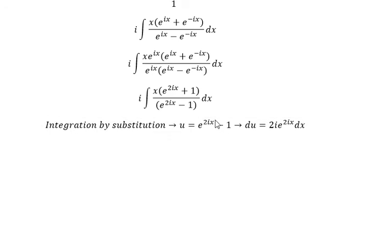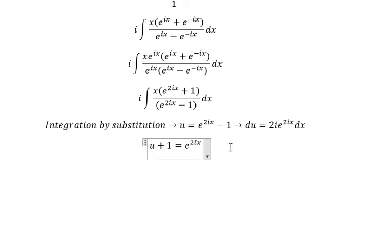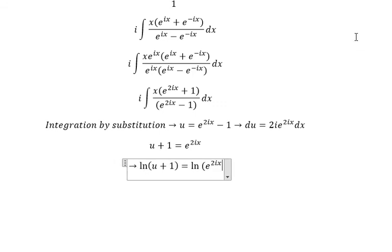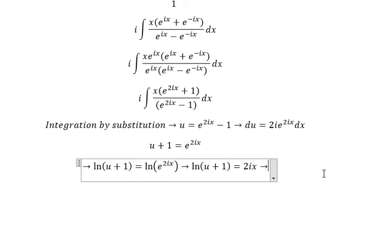Now we need to find the value of s. We move negative one to the left side, giving us u plus one. Next, we apply ln to both sides, and we get ln of u plus one equals 2is. Now we divide both sides by 2i.